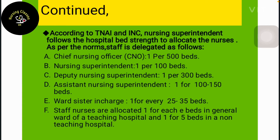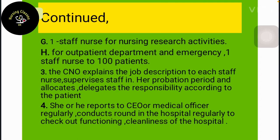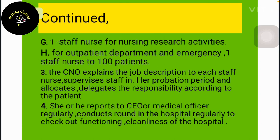Staff nurses are allocated one per each bed in the general ward of a teaching hospital, and one per five beds in non-teaching hospitals. One staff nurse is allocated for nursing research activity. For the outpatient department and emergency, one staff nurse per 100 patients. The CNO explains the job description to each staff nurse, supervises staff during their probation period, and allocates and delegates responsibility according to patient need.